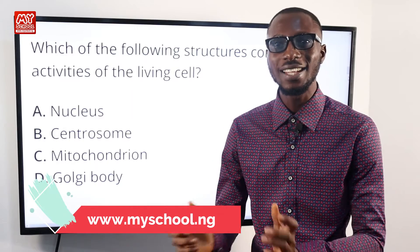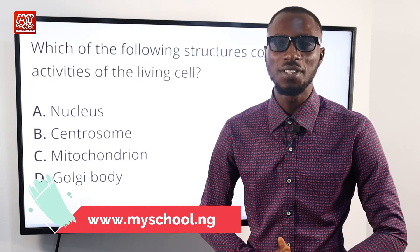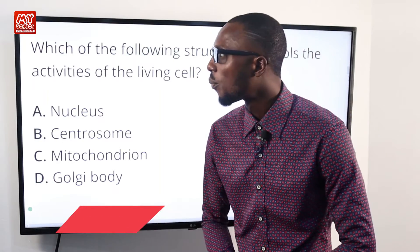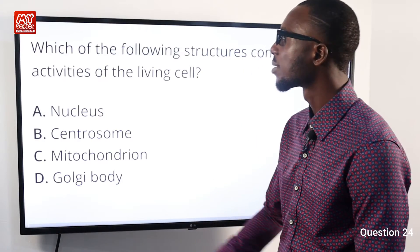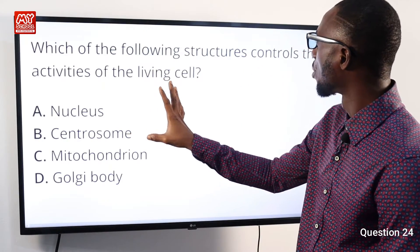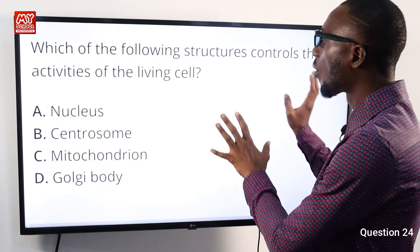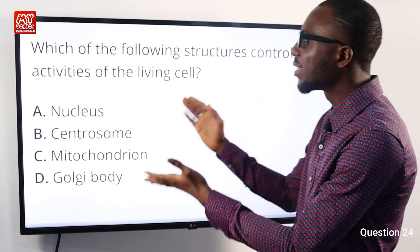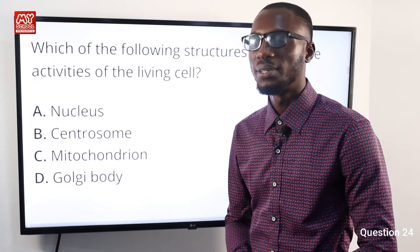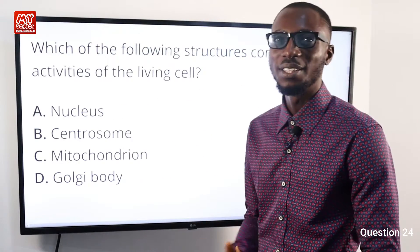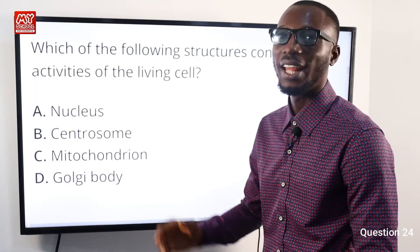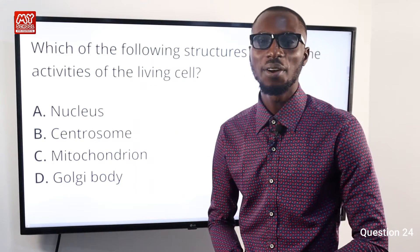Question 24: Which of the following structures controls the activities of the living cell? It is definitely done by the nucleus. So option A is very correct.